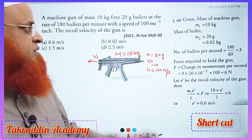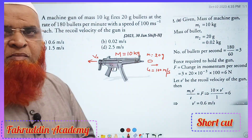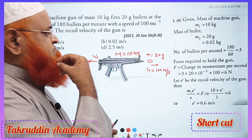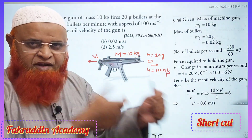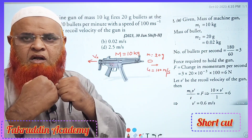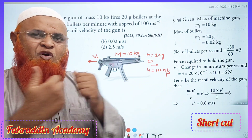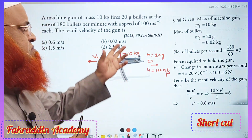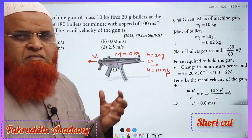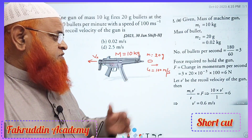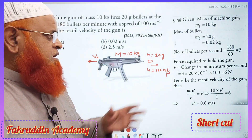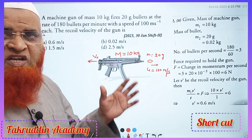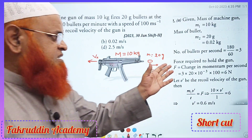My dear students, this is a problem in which there are bullets coming out. Whenever the bullet comes out, the gun will recoil back. A bullet is coming with a speed of 100 meters per second and the mass of the bullet is given. If it comes out, what is the recoil velocity of a gun? That is what is being asked in the question.